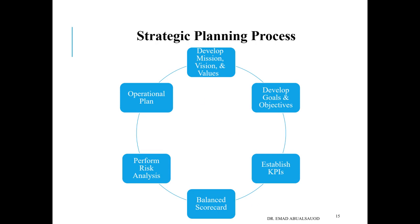Welcome everyone to Quality Management. Today we continue where we stopped last lecture in the strategic planning process. As part of total quality management, the strategic planning process consists of six phases, starting with developing the mission, vision, and values, then developing goals and objectives, establishing KPIs and balanced scorecard, performing risk analysis, and the operational plan. Today we will cover the first two steps, and continue with the remaining process in another section.